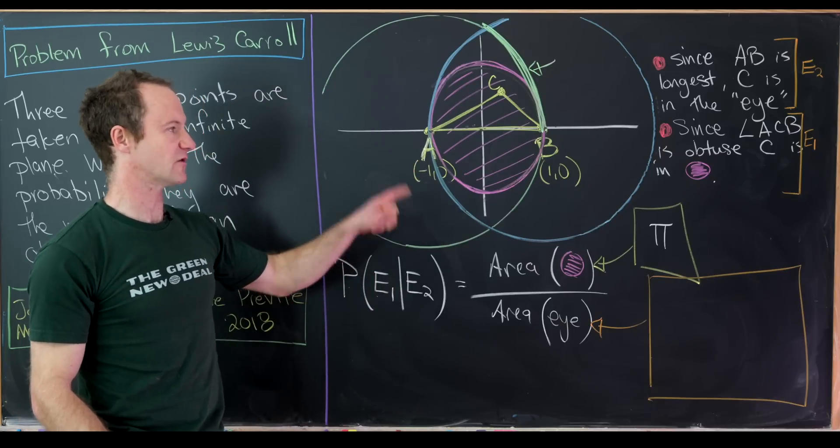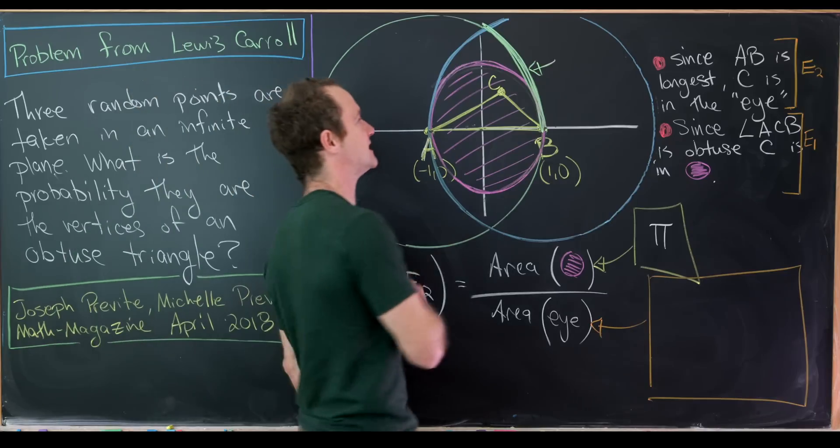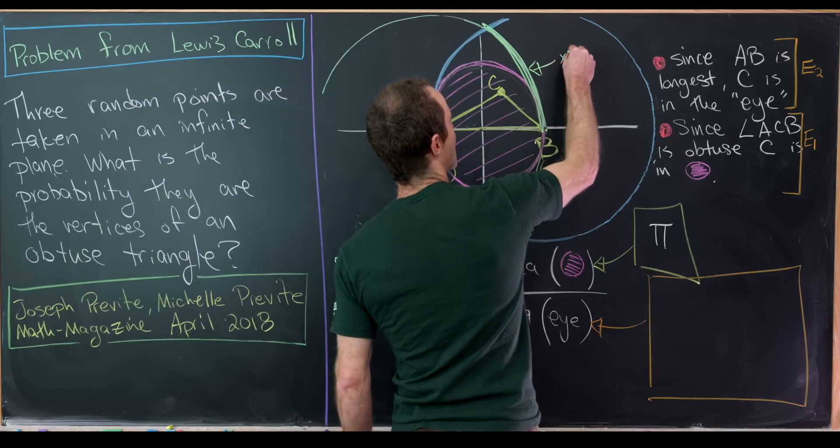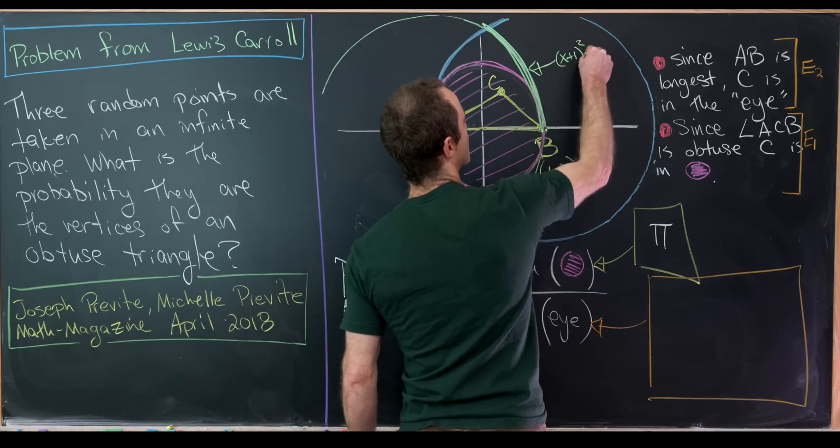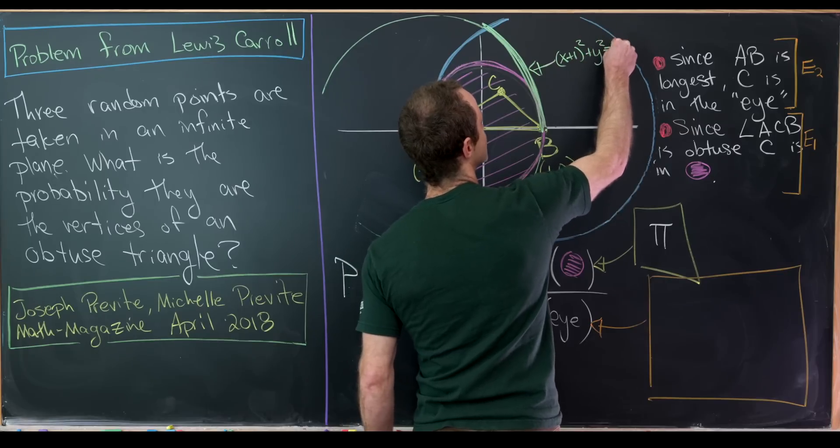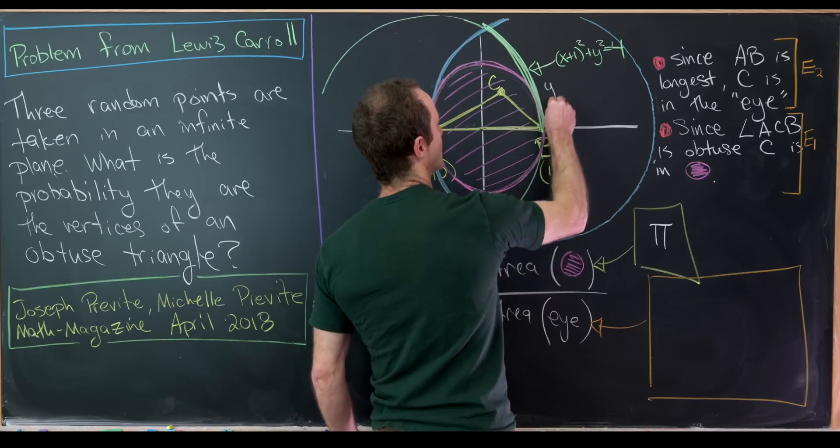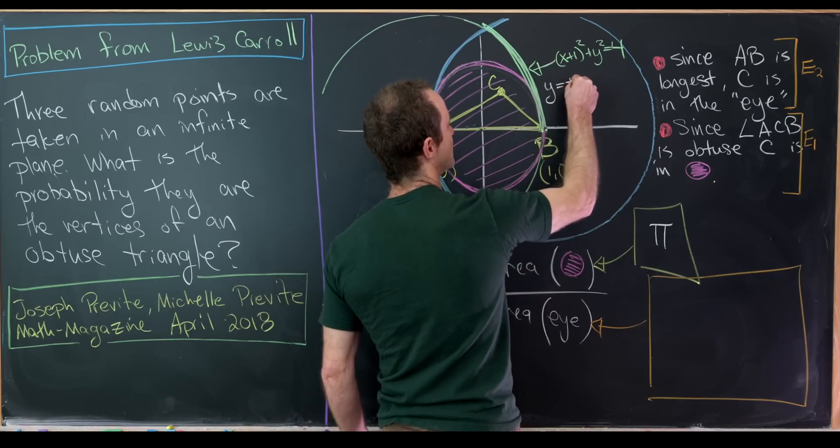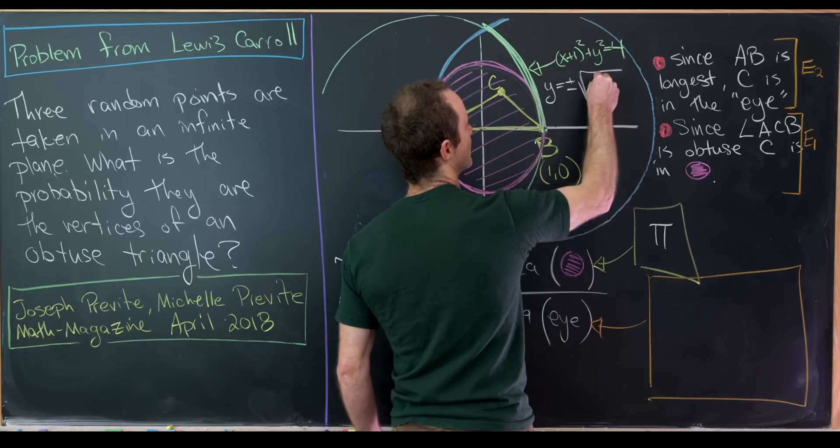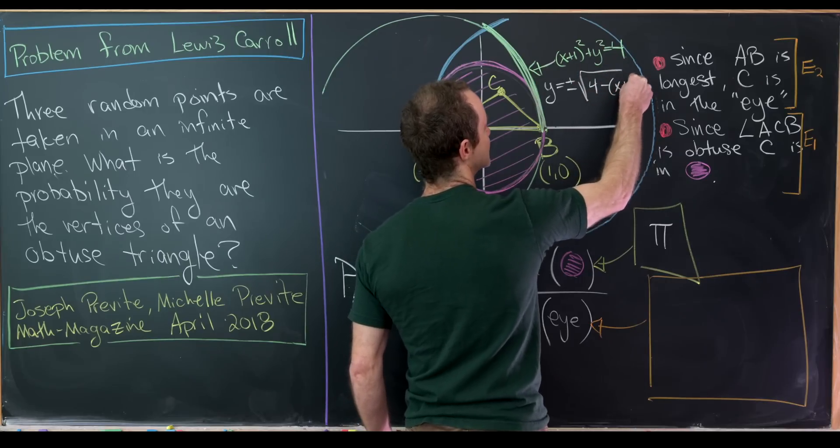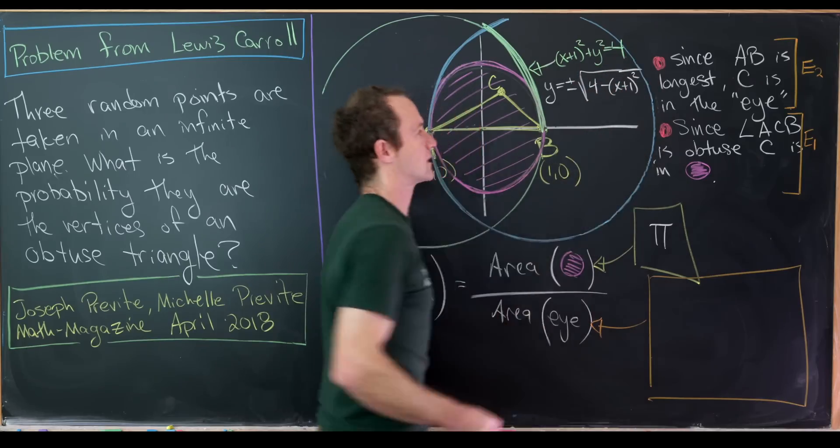So it's this little arc of this green circle going from x equals 0 to x equals 1. But what's the equation of this green circle? Well, since it's centered at negative 1 and it has radius 2, that's fairly easy to write down. This will be (x + 1)² + y² = 4. Great. But we can solve for y and we'll get y is equal to plus minus the square root of 4 minus (x + 1)², like that.